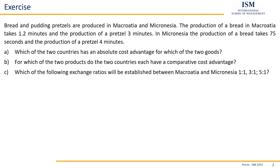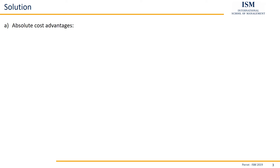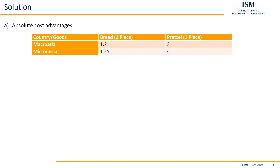We can work our way from part to part. We start with the first one by summarizing the information from the text into a table — the production costs for one bread and one pretzel in minutes. Looking at bread, it's easier to make in Macroasia because they only need 1.2 minutes, and pretzels as well, only taking 3 instead of 4 minutes. So with regards to absolute cost advantages, Macroasia has an absolute cost advantage in both bread and pretzels.